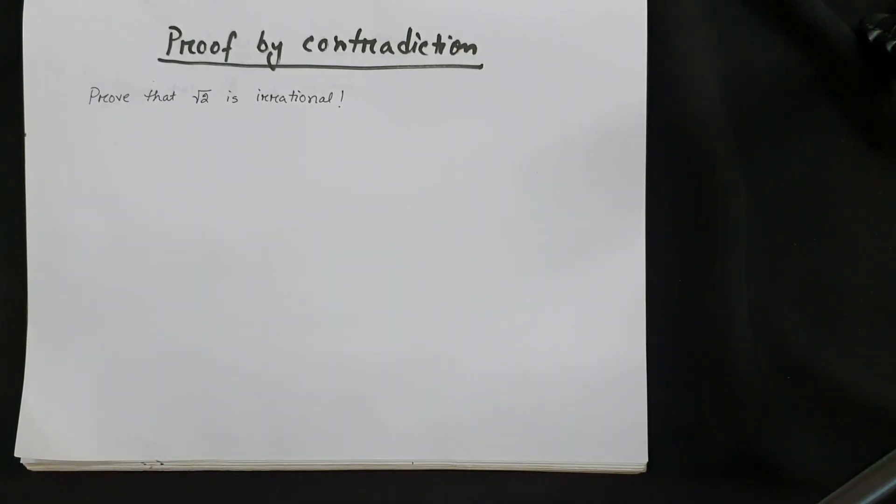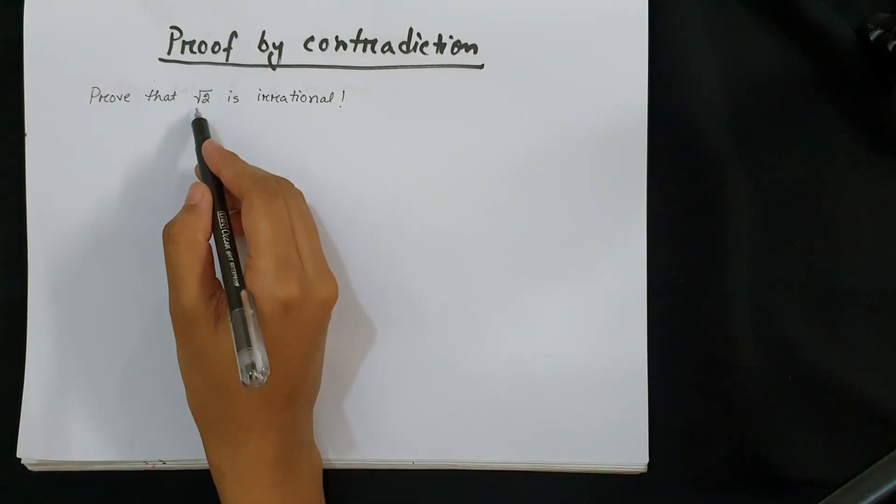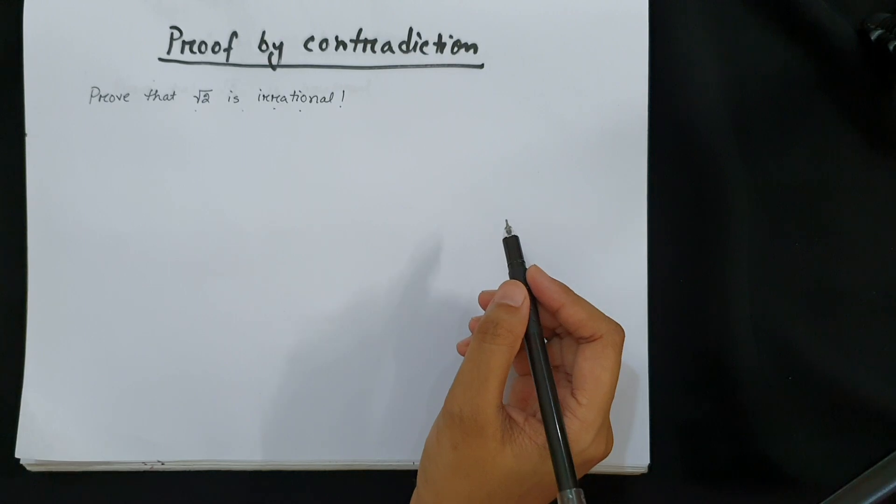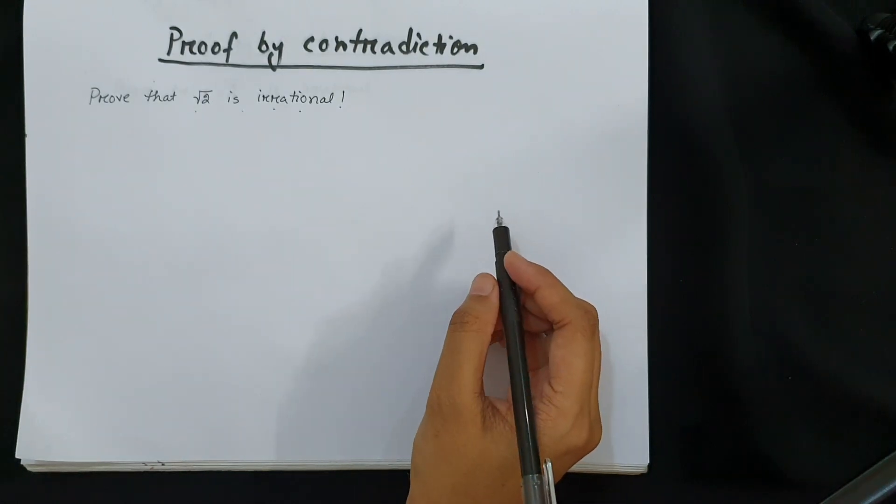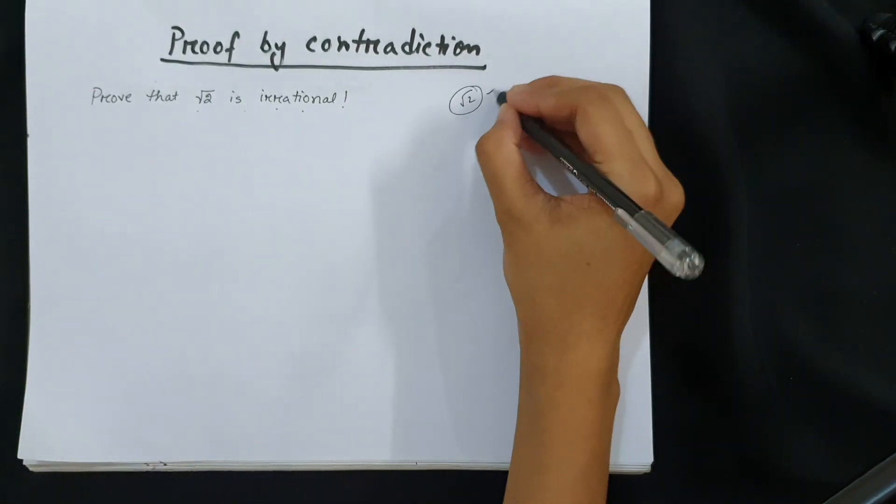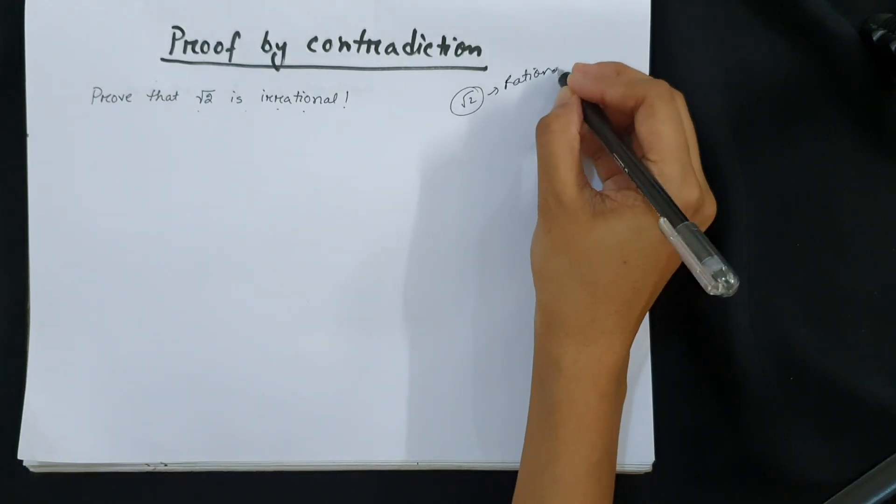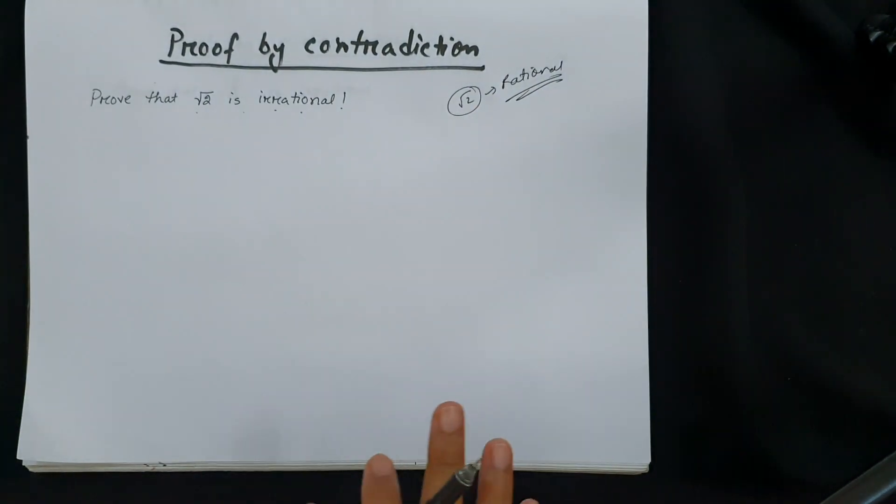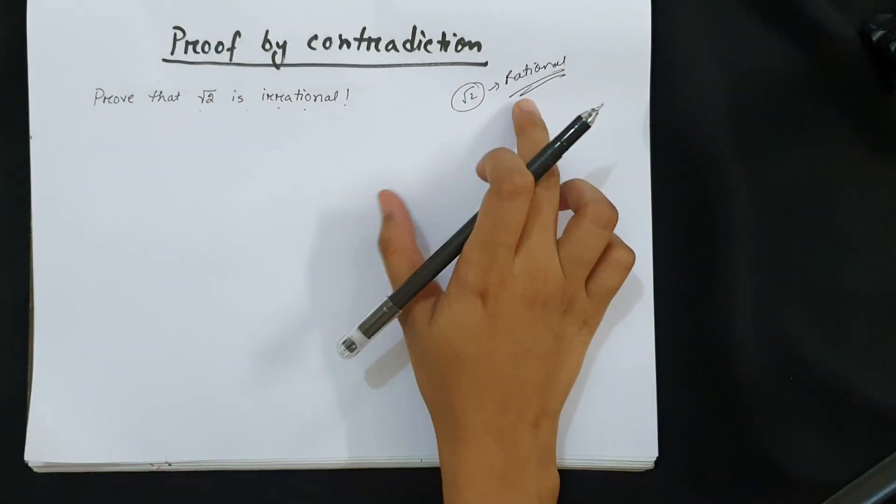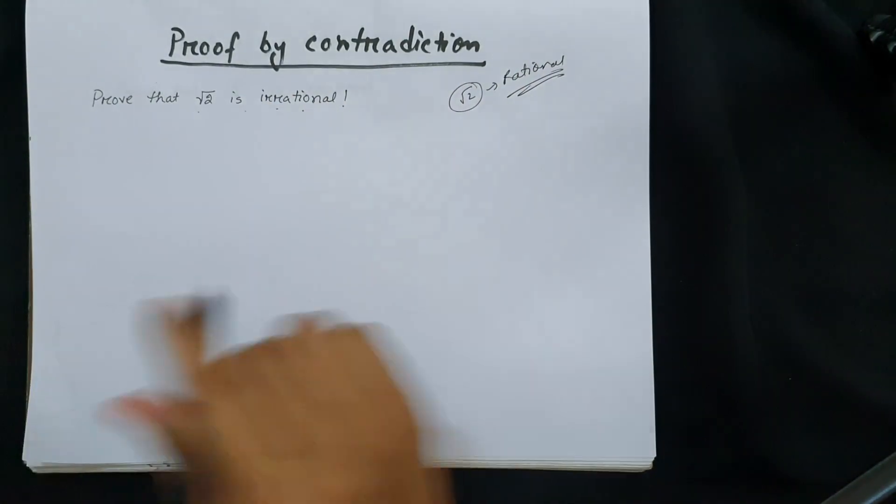So proving something by contradiction is almost similar. For example, we need to show that √2 is irrational. So at first we will start the maths by assuming that √2 is actually rational, and then after simplifying we will show that it's not rational, proving that it's irrational.